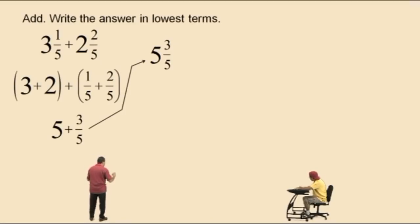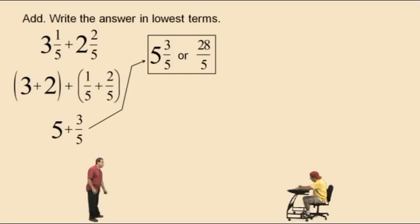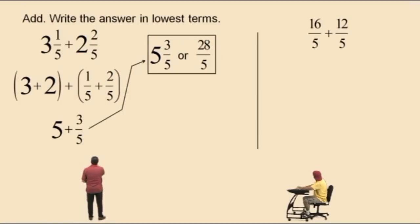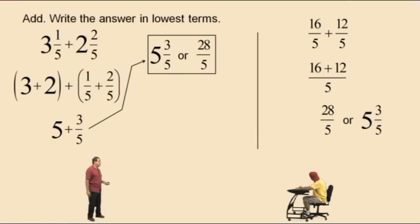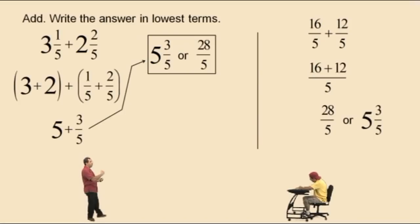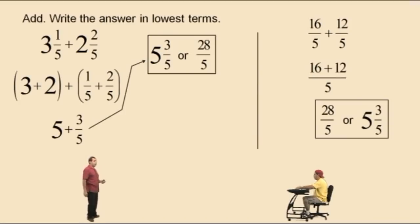Now if we're going to change this to an improper fraction, remember our technique: 5 times 5 is 25, which means 25 fifths plus 3 more fifths is 28 fifths. So there's our answer as a mixed number and as an improper fraction. If we had started by writing the mixed numbers as improper fractions: 5 times 3 is 15, so 15 fifths plus 1 fifth is 16 fifths; and 5 times 2 is 10, so 10 fifths plus 2 more fifths is 12 fifths. With the same denominator, 16 plus 12 fifths is 28 fifths — the same answer. And 28 divided by 5 is 5 remainder 3, so it's 5 and 3 fifths.